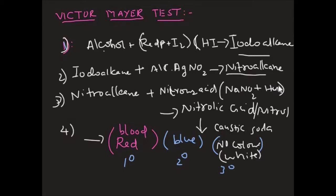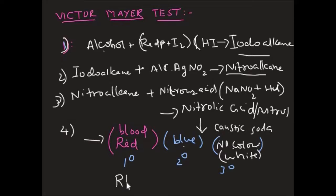From the reaction with nitrous acid, we may get nitrolic acid, nitrole, or pseudonitrol, or any kind of salt of that compound. That will be further treated with excess sodium hydroxide, or caustic soda, giving red color, blue color, or white color. In that way we can identify primary, secondary, and tertiary alcohols in the fourth step. The reason why we call this reaction the RBW test — R is red, B is blue, and W is white. That is why the Victor Meyer test is also called the RBW test.